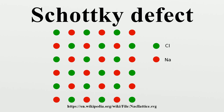Definition: If in an ionic crystal of type A⁺B⁻ an equal number of cations and anions are missing from their lattice sites, so that electrical neutrality as well as stoichiometry is maintained, then this defect is called a Schottky defect. It is a vacancy defect and also a stoichiometric defect, as the ratio of the number of cations and anions remains the same. It occurs only when there is a small difference in size between cations and anions.